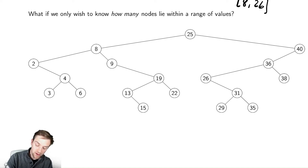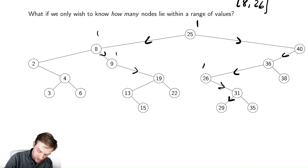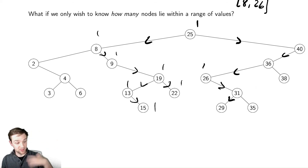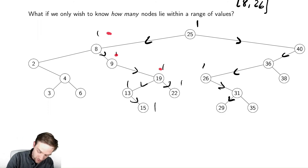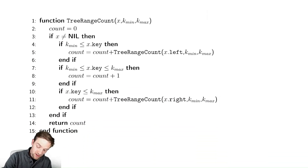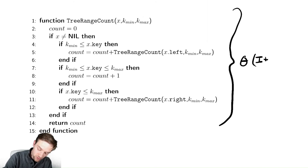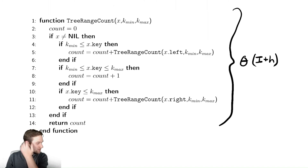Say we want to know how many values are between 8 and 26. We could count them by traversing the tree, just as we did for reporting. We navigate through the tree accumulating a count of 1 each time we find a value in range, eventually summing to 8 values. This is totally valid, but unfortunately it's effectively the same as our report-in-range function, which took Θ(i + h) where i is the number of nodes in range. That's not ideal, so let's look for a smarter approach.